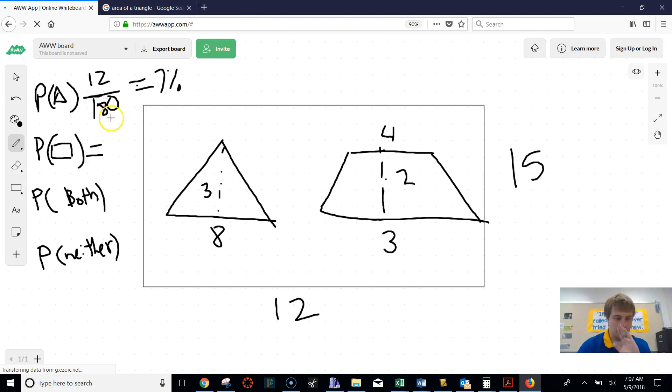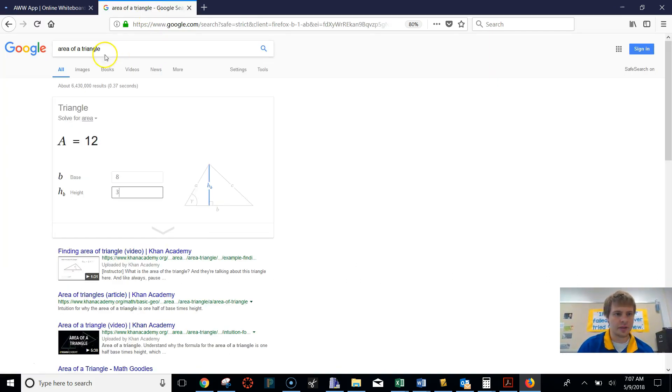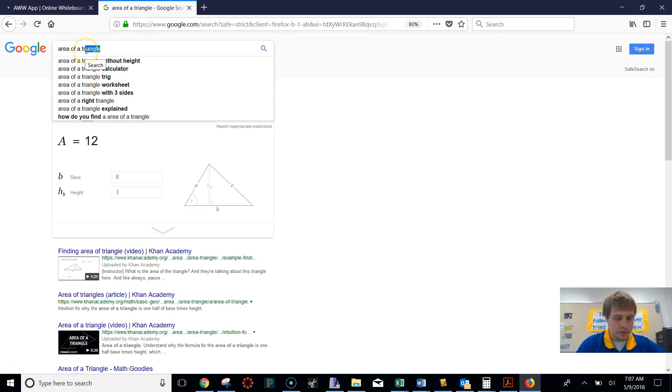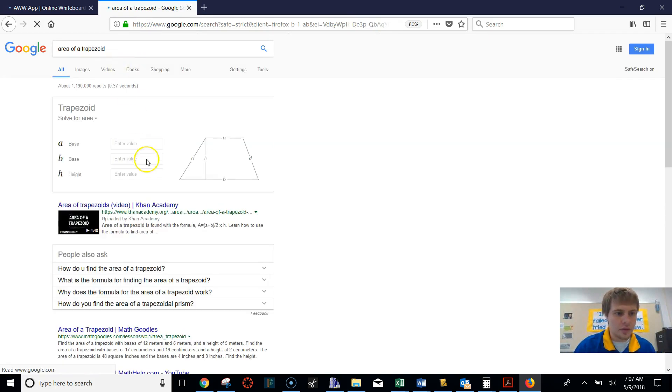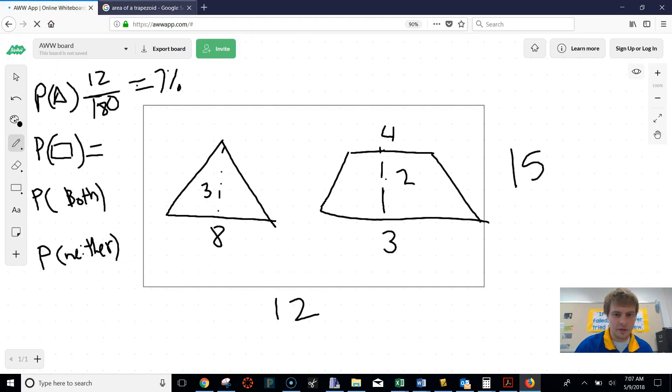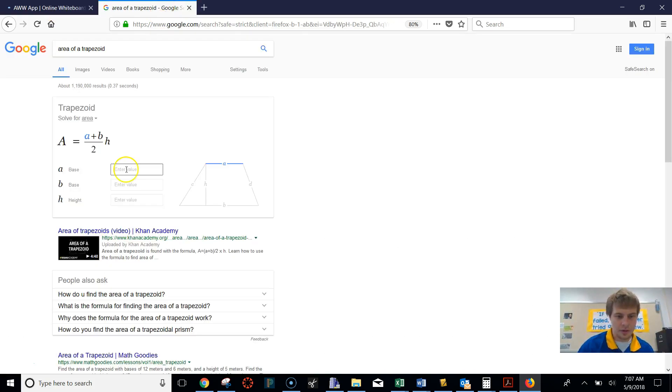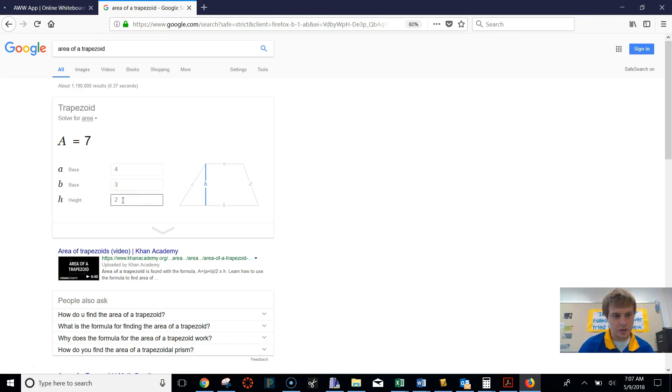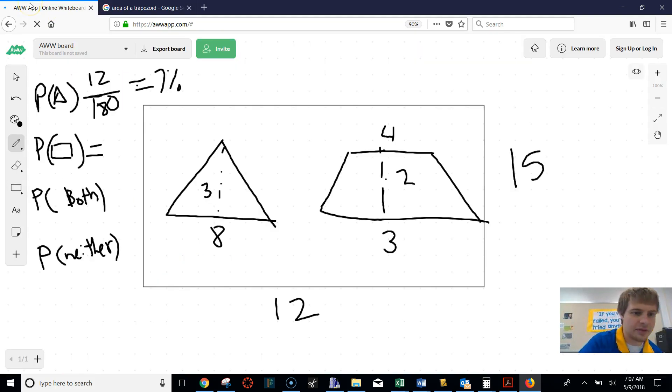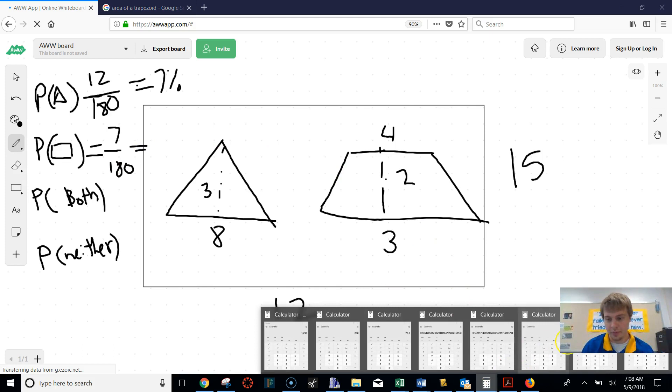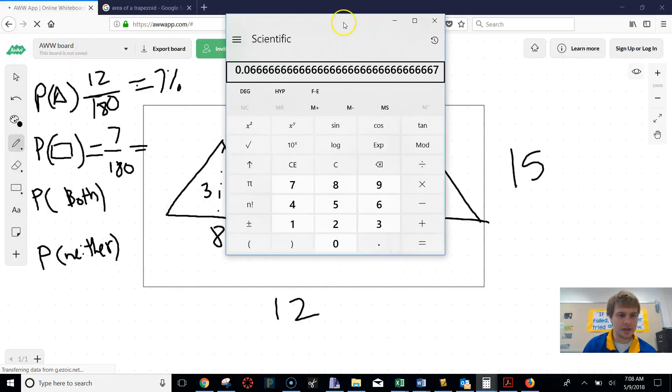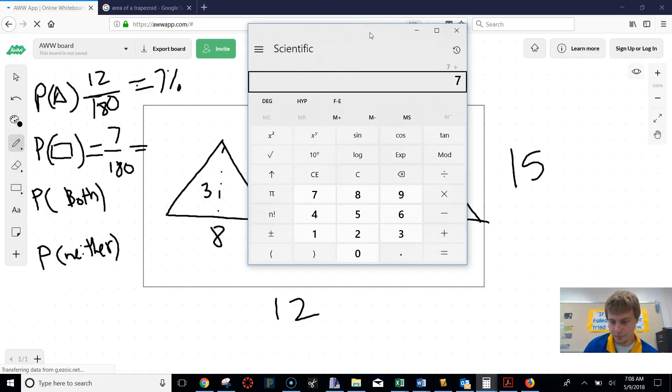Let's do our trapezoid now. So again, that's going to be over 180 because that's our total. But now we need a trapezoid. And then our base, our top base is 4. Our bottom base is 3. And our height was 2. So that's area 7. So that would be 7 over 180, which that's going to be less. It's going to be teeny tiny percent, probably about 3% or something like that. But let's double check. Oh, 4%. So close.